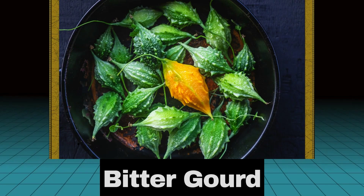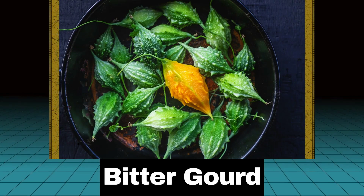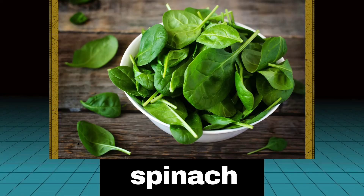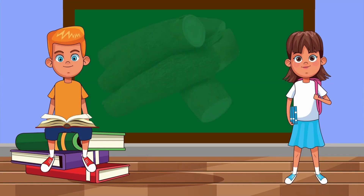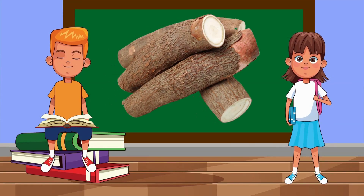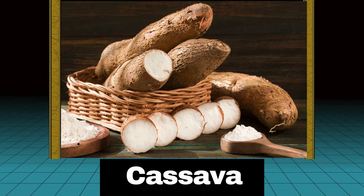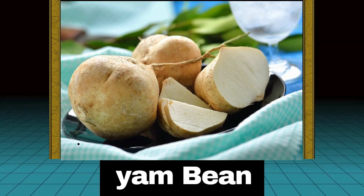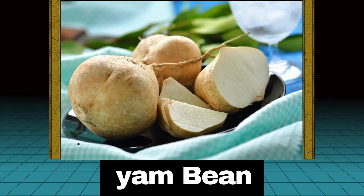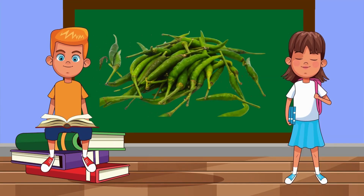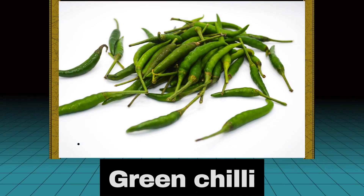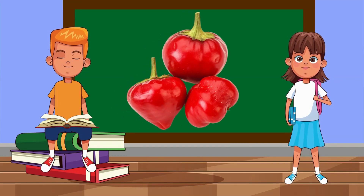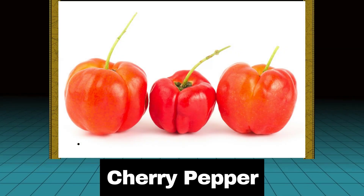What is this called? Bitter gourd. What is this called? Spinach. Can you name this? Cassava. What is this called? Pepper. Can you name this? Cherry pepper.